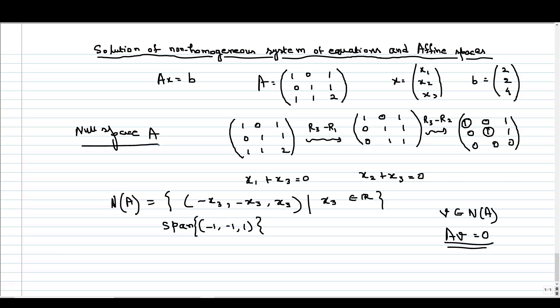For finding the solution Ax equals b, we use the Gaussian elimination method again. This is our augmented matrix, and we do the row operation. Let us write the augmented matrix first. This is 1, 0, 1, 0, 1, 1, 1, 1, 2, and the b matrix is 2, 2, 4. If we do the same similar row operations, at the end we will get 1, 0, 1, 2, then 0, 1, 1, 2, and this is 0, 0, 0, 0.